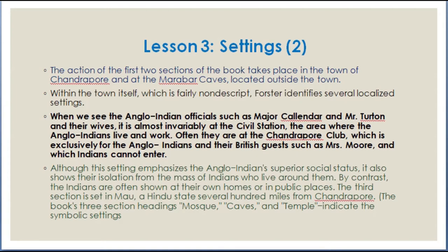By contrast, the Indians are often shown at their own homes or in public places. The third section is set in Mau, a Hindu state several hundred miles from Chandrapur. The book's three section headings — Mosque, Caves, and Temple — indicate the symbolic settings.